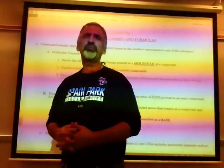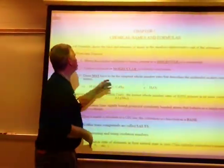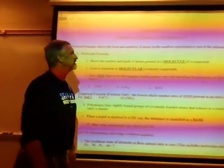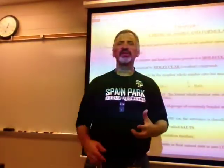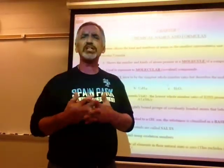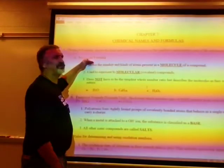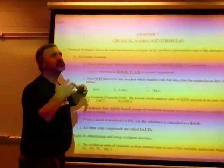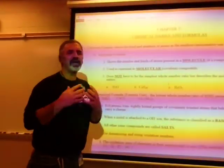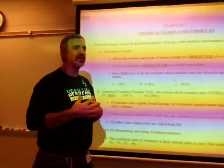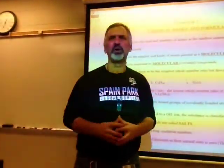When we write a chemical formula like H2O, you need to understand that it shows us the kind and number of atoms in the smallest representation of the substance. For a covalent molecular substance, the smallest part is a molecule, so we use the molecular formula. H2O is the formula of the actual molecule of water. CO2 is the actual individual molecule of carbon dioxide.